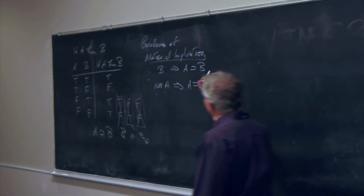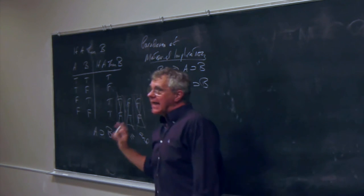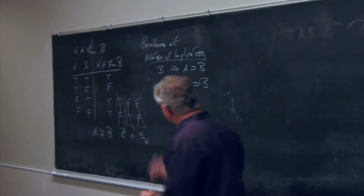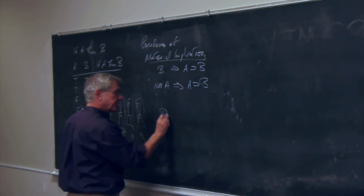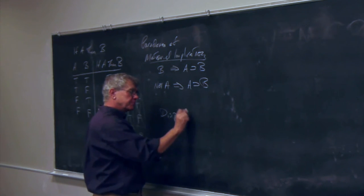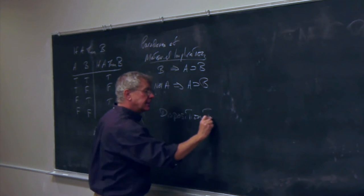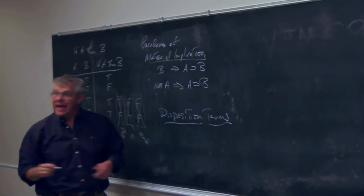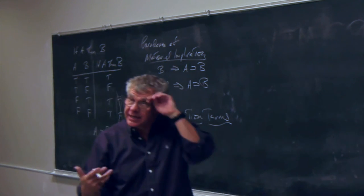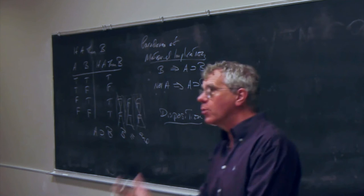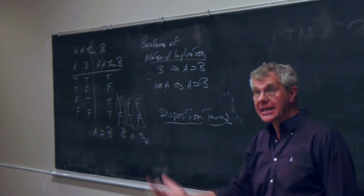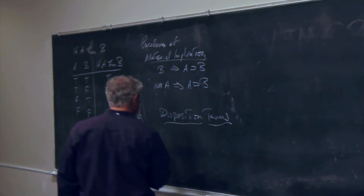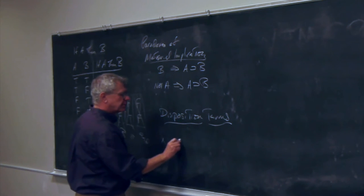It will also be the case that not-A implies 'if A then B.' So: you are not in Cleveland, therefore if you're in Cleveland you'll be hit by a bus. That doesn't feel like it should follow. Something weird is going on here. All that's really just background, because we get to the point of thinking about disposition terms in Carnap's language.